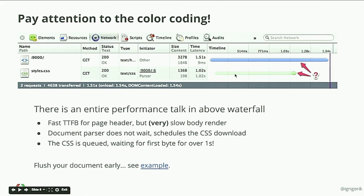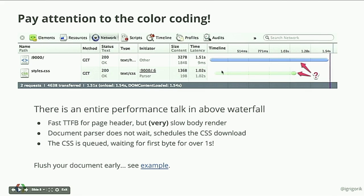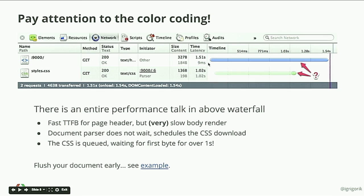Pay attention to the color coding — once you know what these mean, you can diagnose performance problems quickly. A solid line means the resource was actively downloading the whole time. A faded bar followed by a solid section indicates latency — the request was waiting, then transferred quickly. This helps you diagnose server problems: the browser can dispatch requests for CSS while still downloading HTML, but if the CSS request shows a long wait, you're blocked on the server.